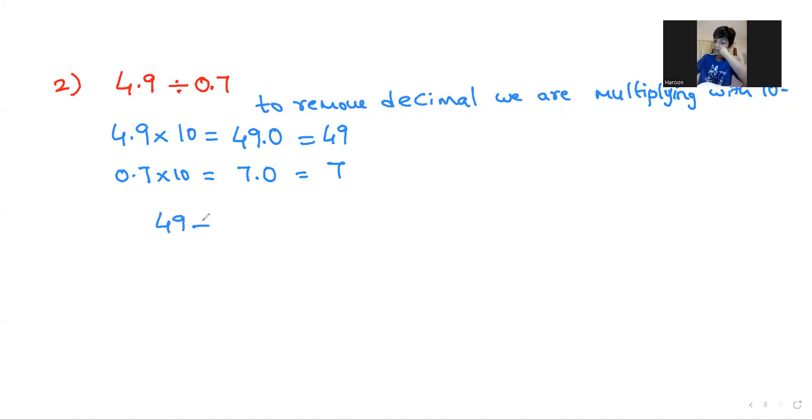So now 49 divided by 7. You know in 7 tables 49 how many times? Yes ma'am, 7 ma'am, 7 sevens are 49.